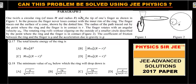Can this be solved using JEE physics? Let's find out. One twirls a circular ring of mass M and radius R near the tip of one's finger as shown in figure one. The finger never loses contact with the inner rim of the ring, and the finger traces out the surface of a cone shown by the dotted line. The radius of the path traced by the point where ring and finger are in contact is smaller. The finger rotates with angular velocity omega-naught. The rotating ring rolls without slipping on the outside of the smaller circle described by the point of contact. The coefficient of friction between ring and finger is mu, and acceleration due to gravity is g.